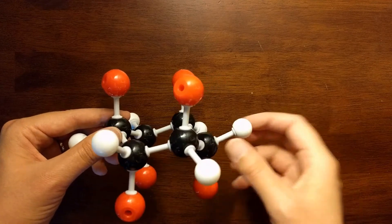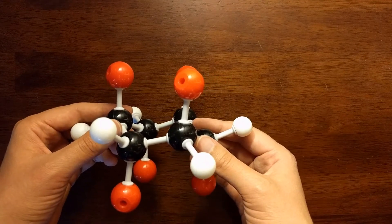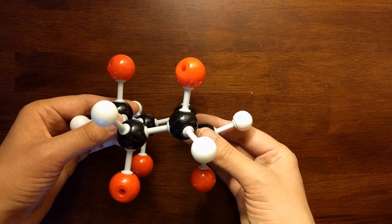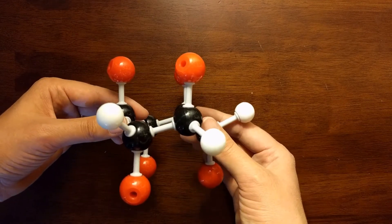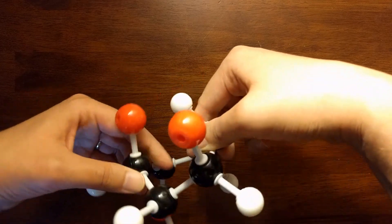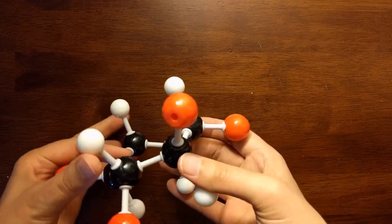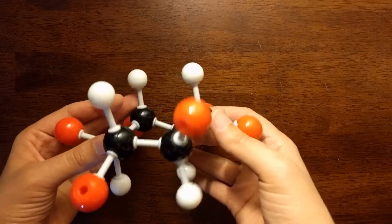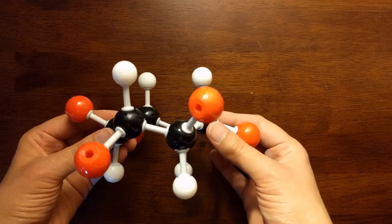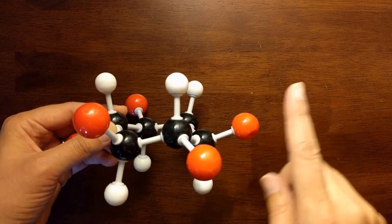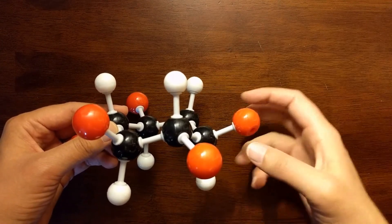Ring inversion is when I convert this chair conformation into a different chair conformation. Notice right now, red hydrogens are in axial position, but by rotating only single bonds, I can end up with a different version of chair conformation. In this version, my white hydrogens are axial, pointing either straight up or straight down.